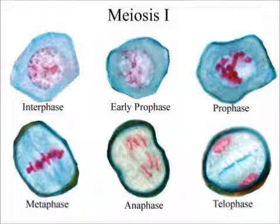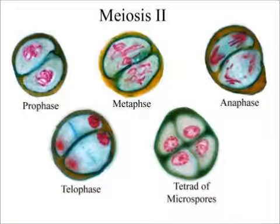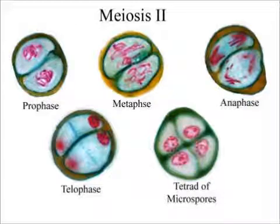In meiosis I, homologous chromosomes pair at the metaphase plate, and then the homologues migrate to opposite poles. In meiosis II, chromosomes spread across the metaphase plate, and sister chromatids separate and migrate to opposite poles.